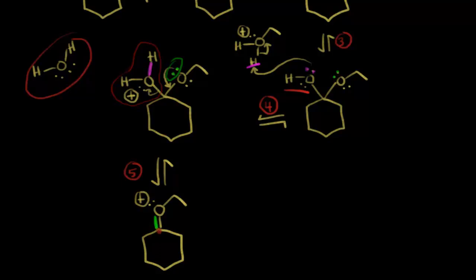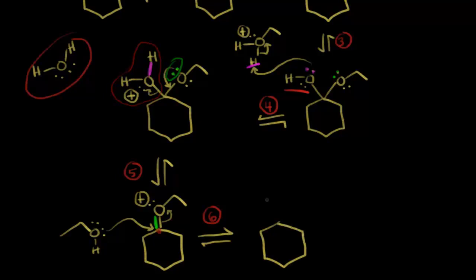Once again, we're going to get a nucleophile attacking our electrophile in the next step. This would be step six: a nucleophilic attack. Ethanol is our nucleophile. One of these lone pairs of electrons would attack our electrophile and push these electrons off onto this oxygen. We now have an oxygen with still a hydrogen on it, an ethyl group, a lone pair of electrons, and a plus one formal charge on this oxygen. These electrons in magenta formed a bond — that oxygen is now bonded to that carbon. Over here on the right we have an oxygen with an ethyl group, and now there are two lone pairs of electrons on this oxygen.